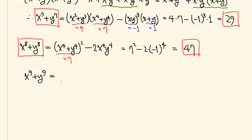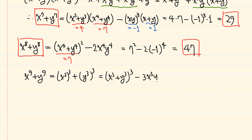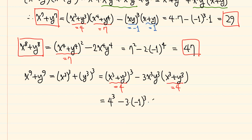For the power of 9, we use the fact that it is the cube of x cubed plus the cube of y cubed, so we use the cube formula. We have x cubed plus y cubed cubed minus 3x cubed y cubed times x cubed plus y cubed. Using the previously obtained value of x cubed plus y cubed equals 4, we have 4 cubed minus 3 times minus 1 cubed times 4, which is 76.